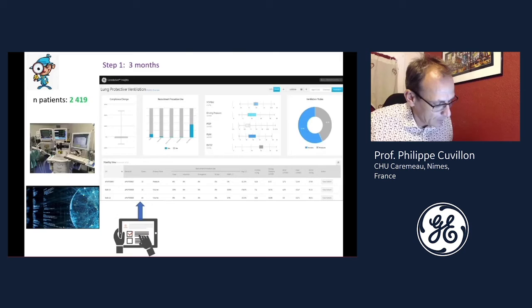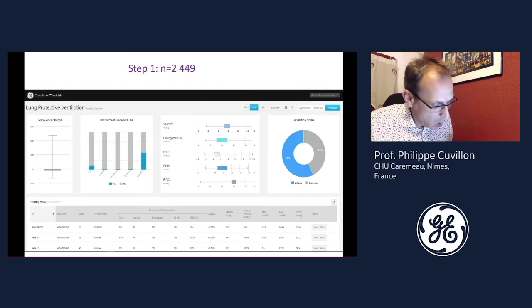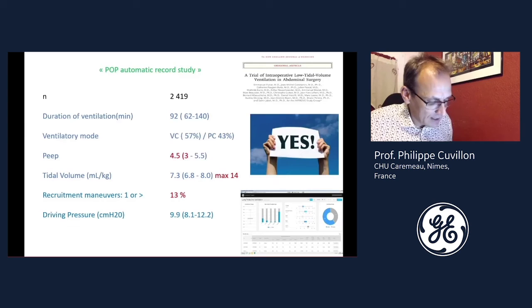This is the first picture of our real practices produced by the dashboard. We can view the percentage of recruitment maneuvers, type of ventilation depicted in the circle with blue color for volume mode, for example. The data for step one are shown on this slide. As you can see, only 13 percent of patients had recruitment maneuvers and median PEEP was less than five centimeters.